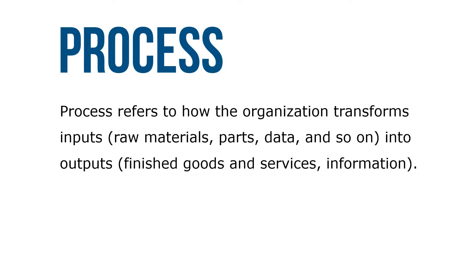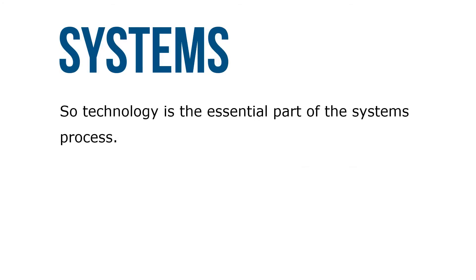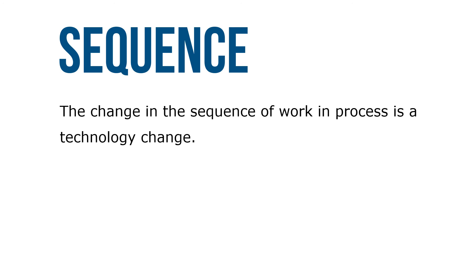Process refers to how the organization transforms inputs like raw materials, parts, data, and so on into outputs like finished goods and services and information. Technology is an essential part of the systems process. The change in the sequence of work and process is a technology change. With the aid of a computer, organizations have changed the way they process information.